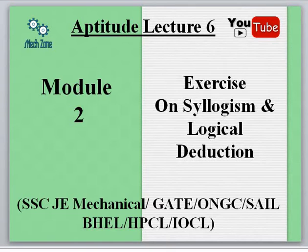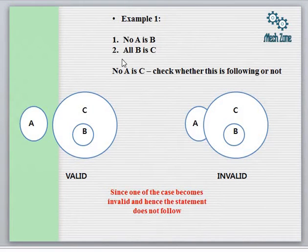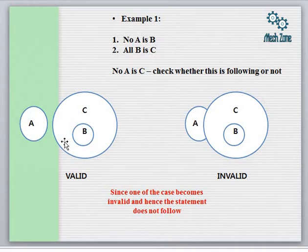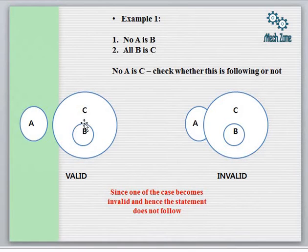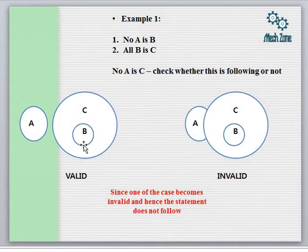Let us start with the first example where we have been given: No A is B, All B is C. No A is B means A and B are two separate identities and they will have nothing in common. All B is C means B is lying entirely inside C. This is one of the cases where the two statements are valid.